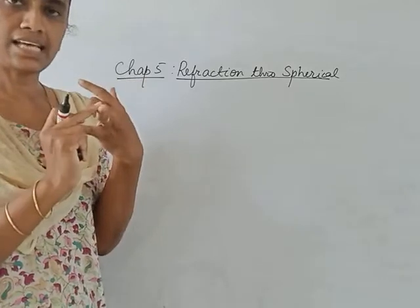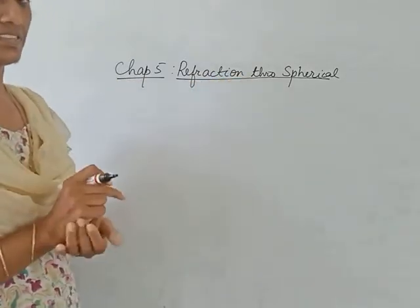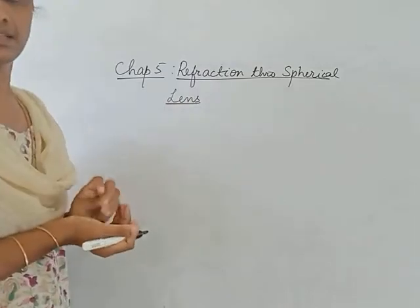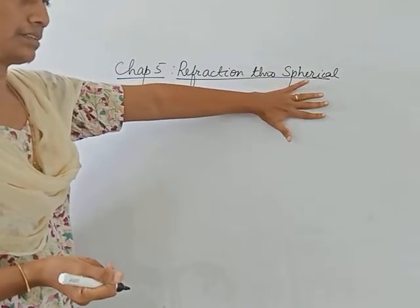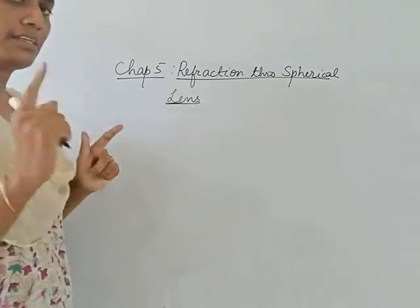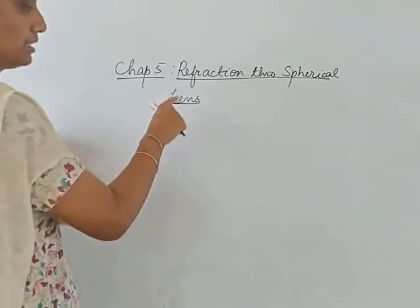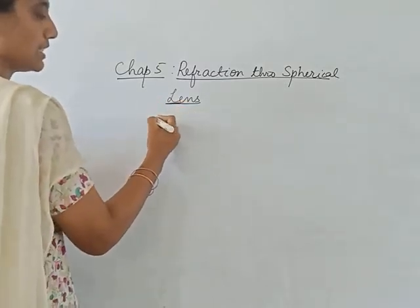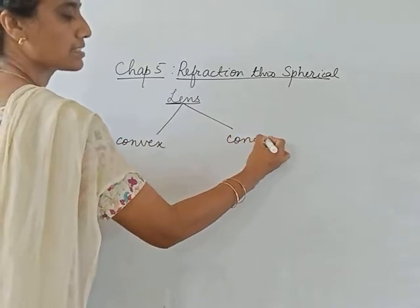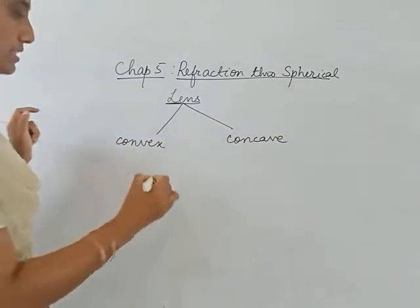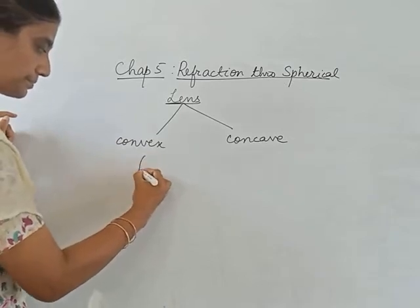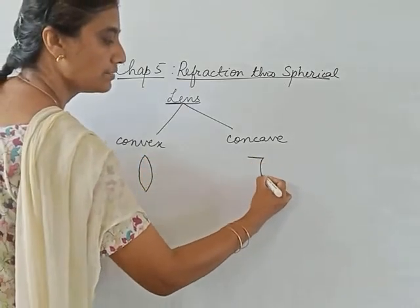In the previous chapter all surfaces were plane — prisms and glass slabs. Now we look at spherical surfaces. A lens is a spherical transparent medium through which refraction takes place. Lenses are of two types: convex lens and concave lens.